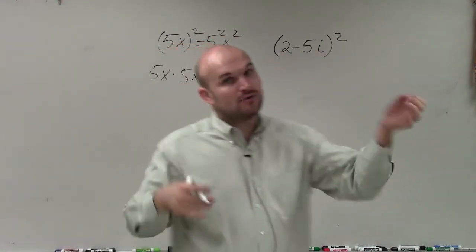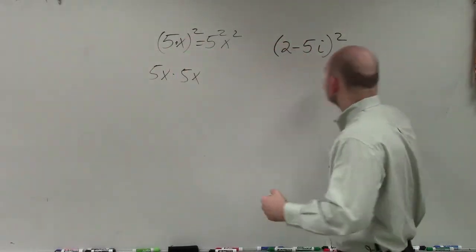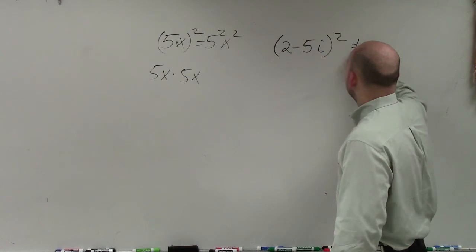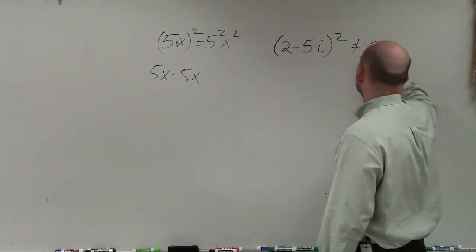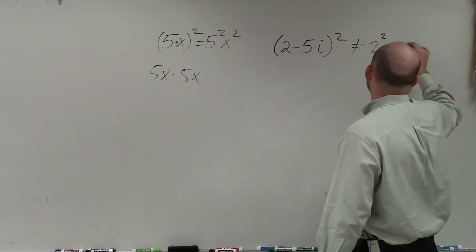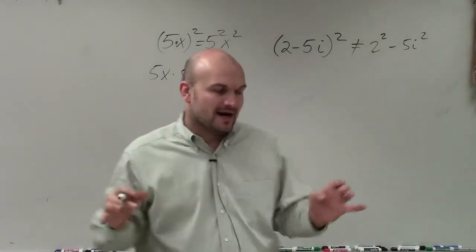So we can distribute the power across multiplication. However, we cannot distribute a power across addition or subtraction. So (2 - 5i)² does not mean 2² - (5i)². It does not mean that. You cannot apply this.